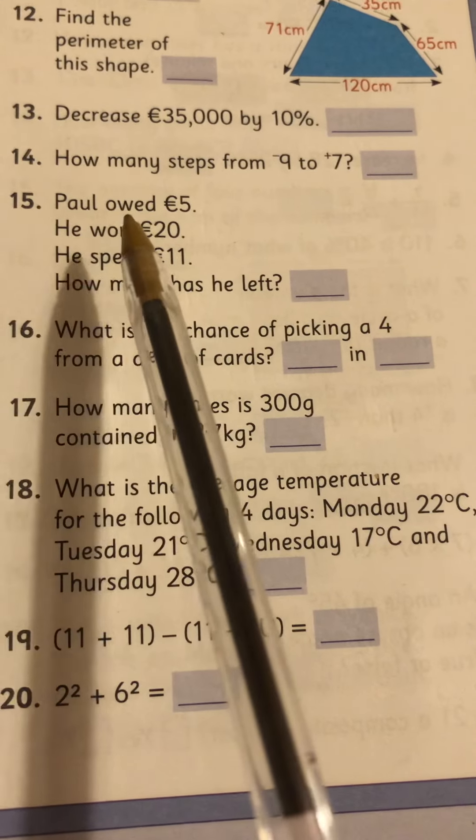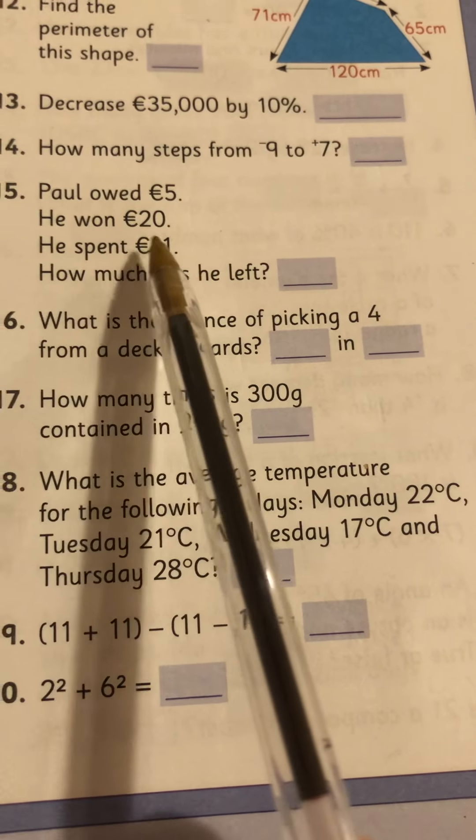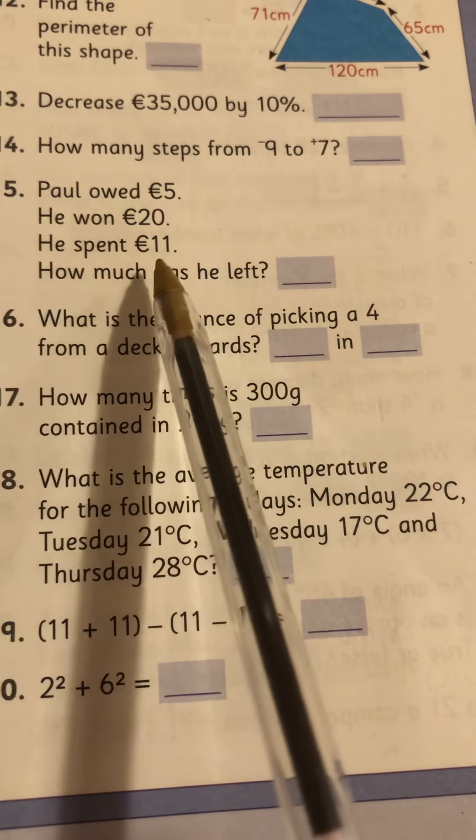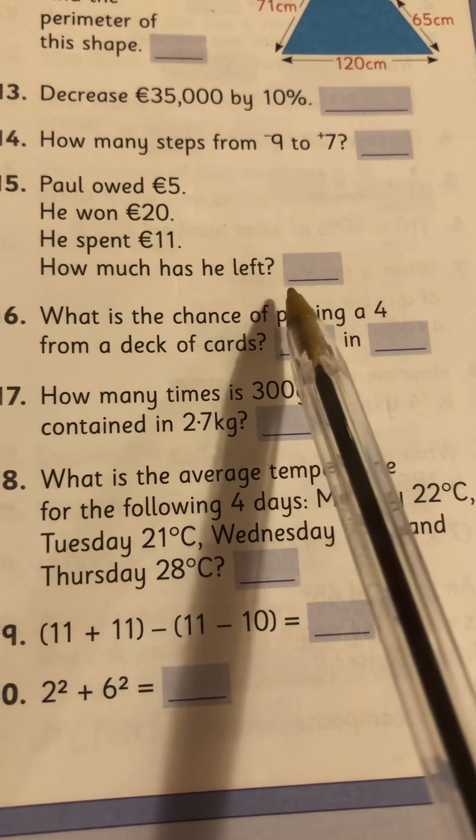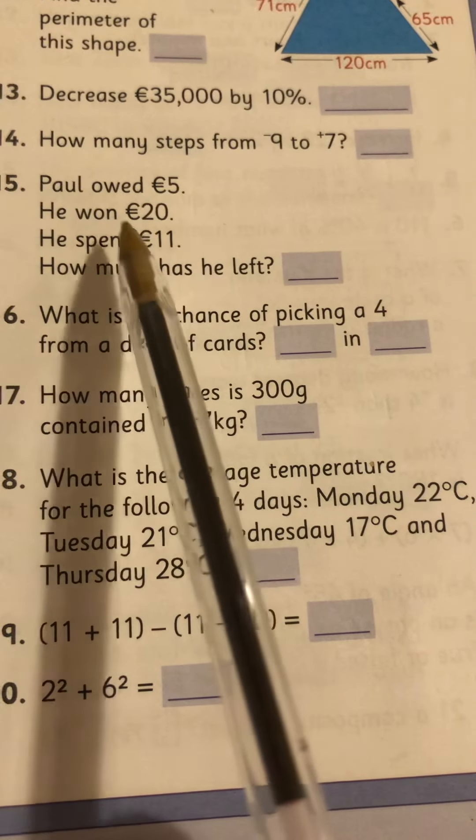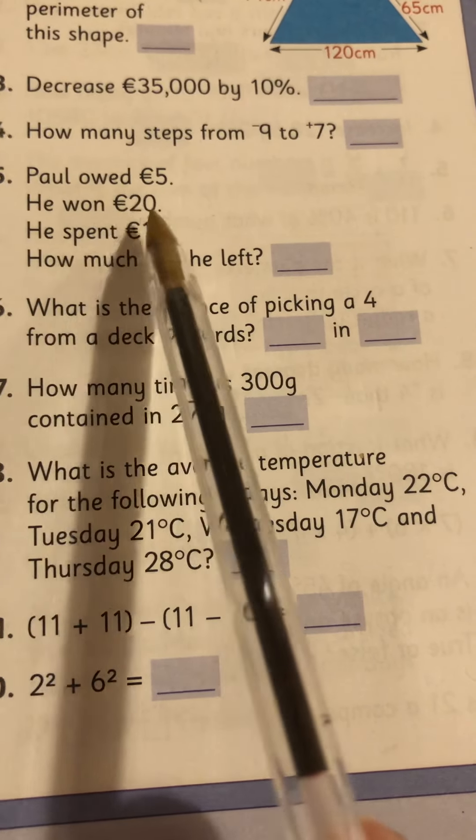Number 15, Paul owed 5 euro. He won 20 euro. He spent 11 euro. How much has he left? Probably the easiest way might be to say if he won 20 euro. So he had the 20 euro,